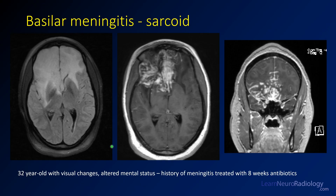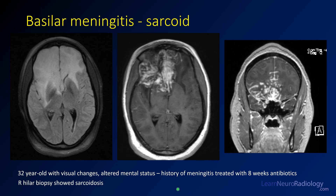Here is a bifrontal example. On FLAIR there is diffuse signal abnormality of the frontal lobes, worse on the right. On post-contrast imaging there is avid enhancement in the leptomeningeal spaces and parenchyma. The coronal post-contrast image shows sulciform enhancement interdigitating into the sulci along with parenchymal nodules. This was a 32-year-old with visual changes and altered mental status who had a history of treated meningitis. This patient turned out to have sarcoidosis, confirmed on a right hilar biopsy of lung nodes.